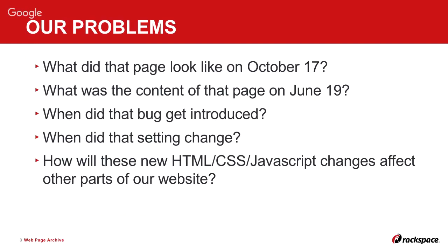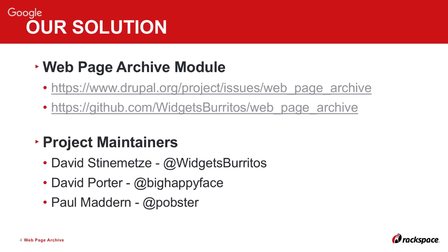Our solution to these problems was a module called the WebPage Archive Module. Think Wayback Machine, but in Drupal — and it can do more. The project lives in two places: Drupal.org and GitHub, because I don't like the patch system on Drupal.org. They maintain parity, so they're pretty even.